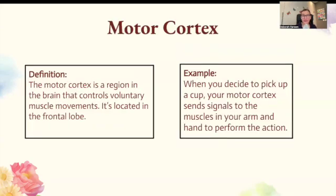Motor cortex. The motor cortex is a region in the frontal lobe of the brain that controls voluntary muscle movements. When you decide to pick up a cup, your motor cortex sends a signal to the muscles in your arm and hand to perform that action.